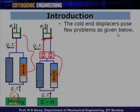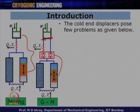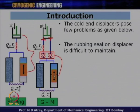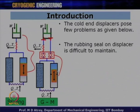The cold end displacer poses a few problems. In a GM cryocooler especially, there is a rubbing seal that works at low temperature. These seals can cause problems. The rubbing seal on the displacer is difficult to maintain and one has to take care of how it is composed. At low temperatures, there could be shrinkage, and a seal which is perfect at room temperature may not work well at low temperature.